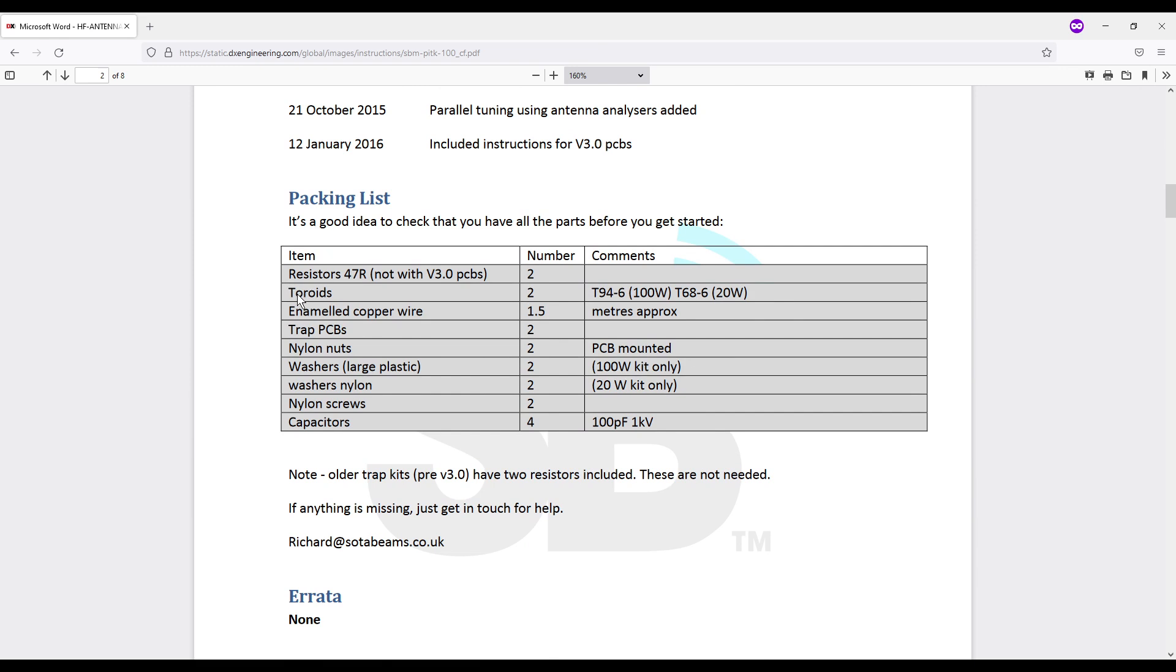In the packing list, you can see toroid for the 100 watt uses a T94-6, or the 20 watt uses the T68-6. So that 6 designates a powdered iron core. The dash 6s are typically yellow in color, and 94 is the 0.94 inches in diameter, and that's what we got.